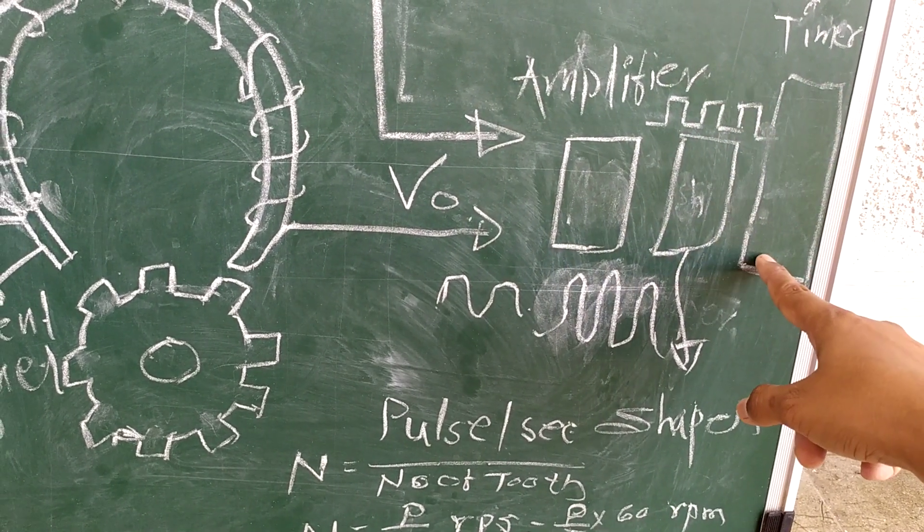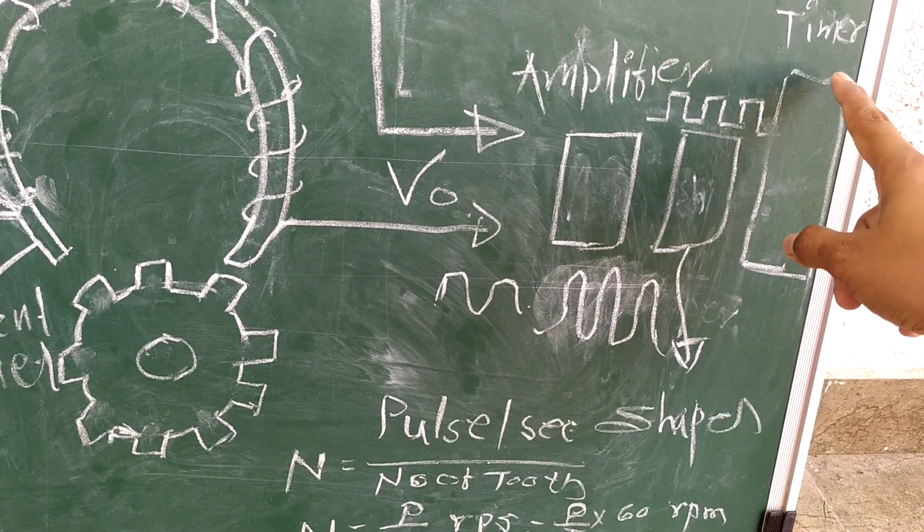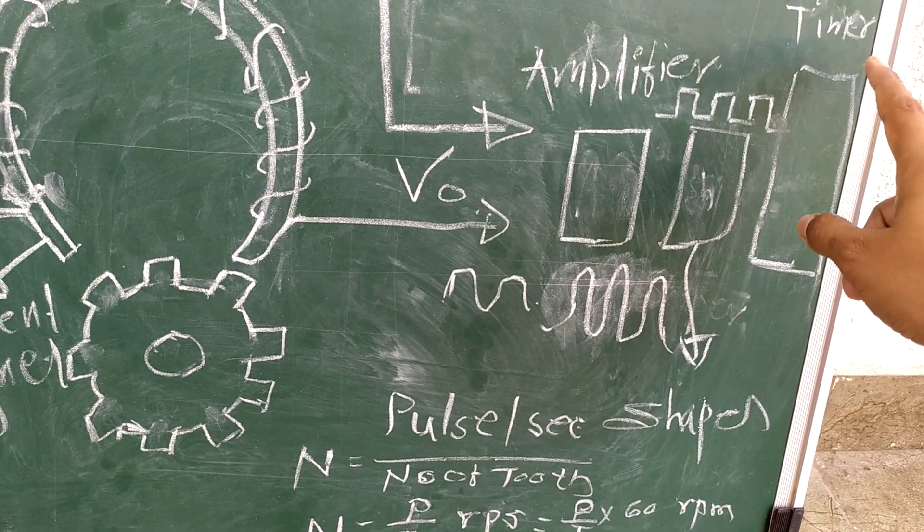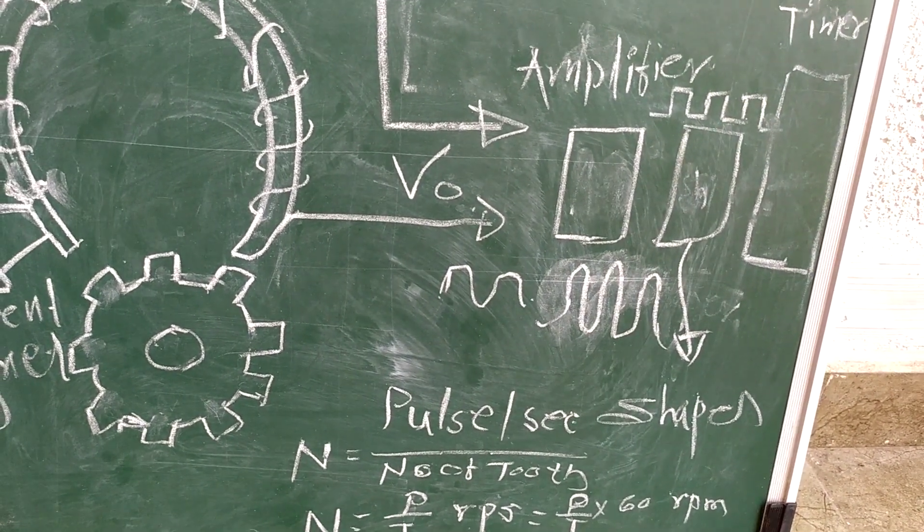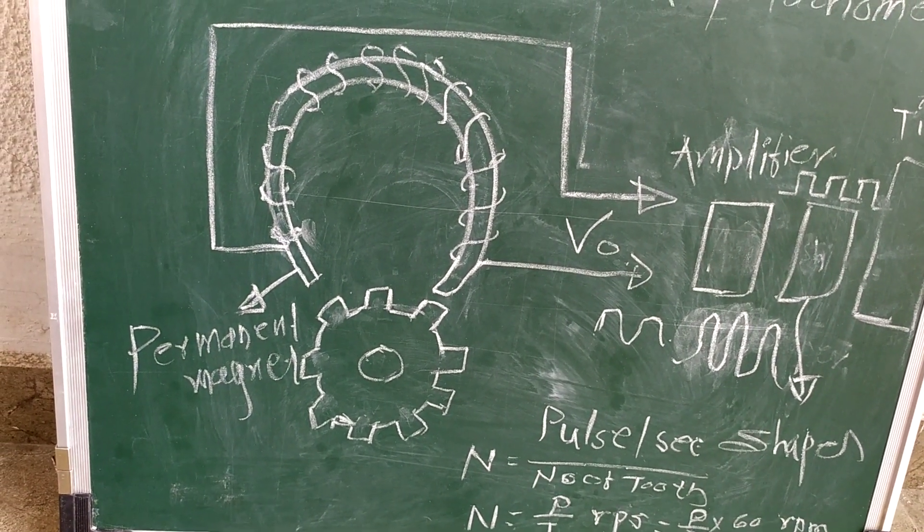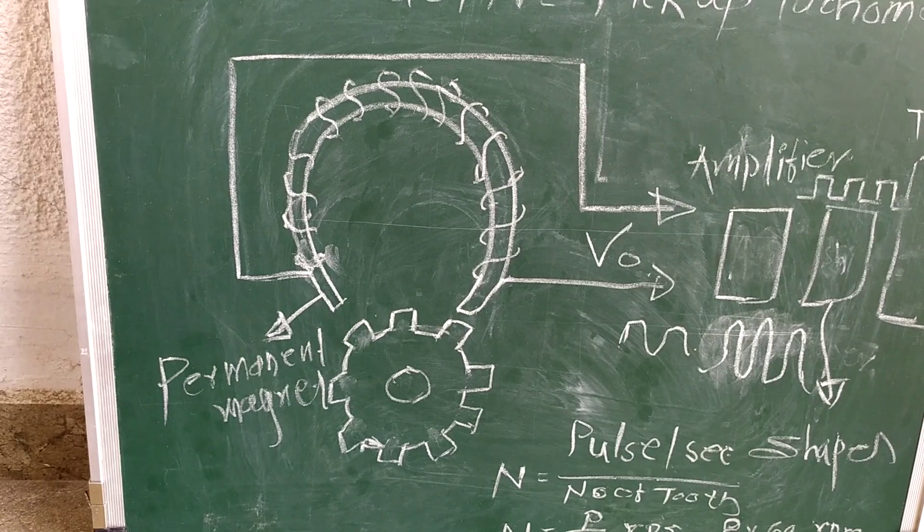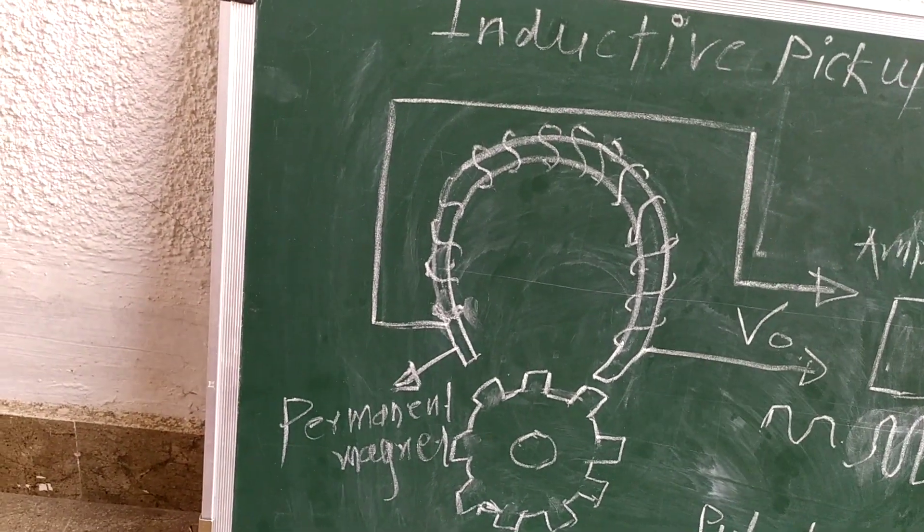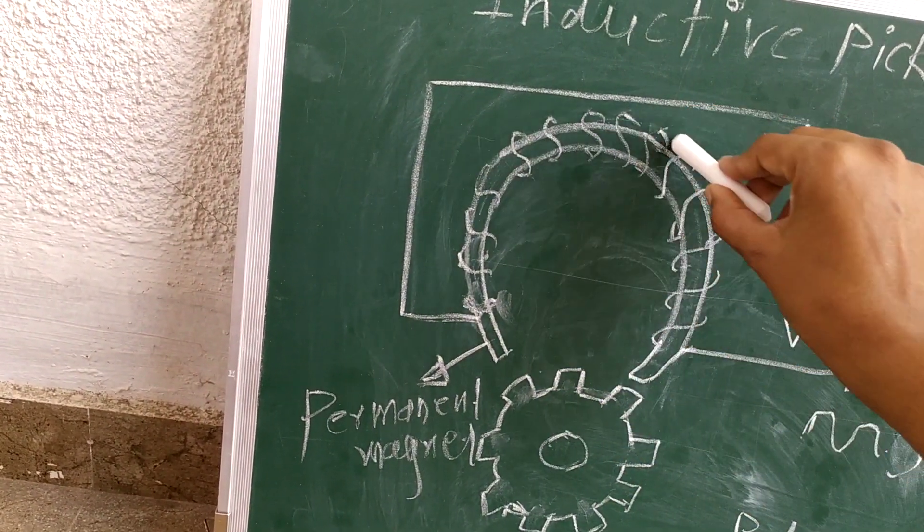The signal is then fed to the timer or frequency timer. From here we get the output in pulses per second. This is the simple construction. Now let's start with the working. When the permanent magnet with the coil is supplied with current and the shaft is rotating, what will happen?